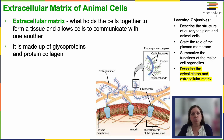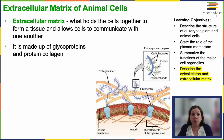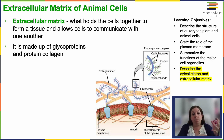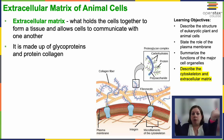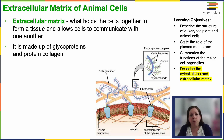Now, the extracellular matrix — technically not an organelle, but a really important part of the cell. It's a network of substances secreted by the cell: proteins and carbohydrates, often including glycoproteins, which are proteins with sugars bound to them. Collagen is often in this matrix. These are created in the endoplasmic reticulum, modified and transported through the Golgi apparatus, then sent to the plasma membrane where they are secreted outside the cell.